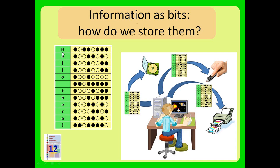For example, a capital letter H is represented by this off, on, off, off, on, off, off, off. Eight bits make up this character. A small letter H would have a different bit pattern, and you can compare this small H to that capital H and you'll see the on/off pattern is different.